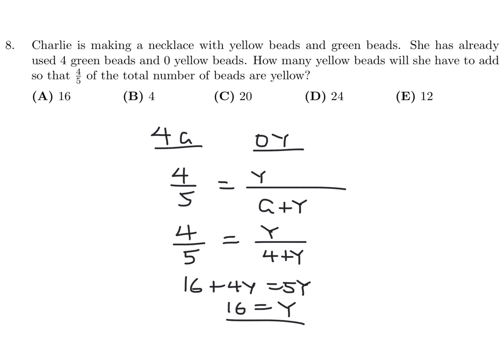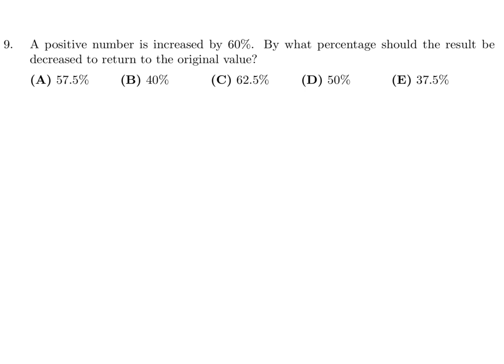A positive number is increased by 60%. By what percentage should the result be decreased to return to the original value? The answer is not 60%, and good, it's not even one of the choices. Okay, so let's walk through this. We're going from 100, but I'm actually just choosing 100 just to make it easy to understand. We're going to increase by 60, so that means the number goes to 160. Now we want to go back from 160 to 100. So what do we have to decrease by? We have to decrease by 60, but that is not a percentage.